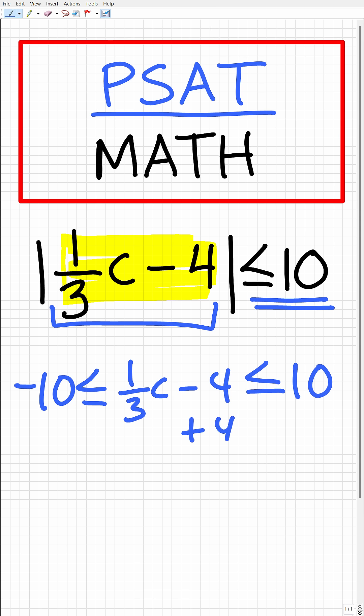What we're going to do is add 4 to all sides of the inequality. So over here, we're going to have negative 10 plus 4. This is going to be negative 6 is less than or equal to 1/3 C is less than or equal to 14.